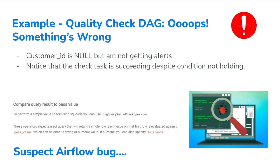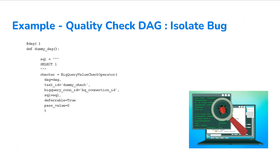You've realized that the tool you love isn't working quite as it should. A good step, and this is what leads you to a bug report, is to force it to fail in a very obvious way — something simple like 'SELECT 1' with a pass value of zero. That's clearly a condition that evaluates to false. And lo and behold, you run that and get a success. So there's clearly something wrong with the BigQuery value check operator.